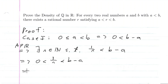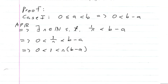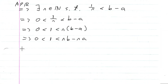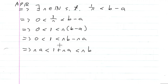I can multiply this entire inequality by n to give me 0 < 1 < n(b - a). I can distribute that n to get 0 < 1 < nb - na. I can add na to this entire inequality to give me na < 1 + na < nb. So I have 1 + na separating na and nb.